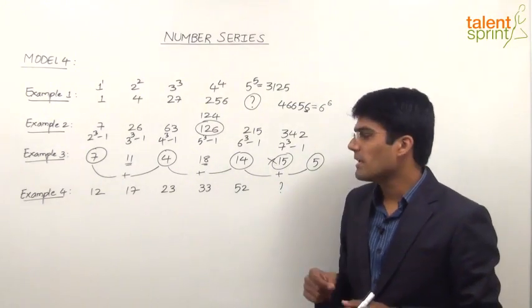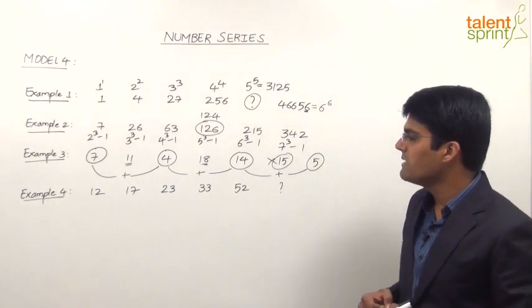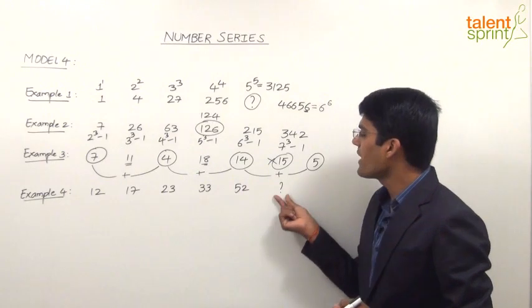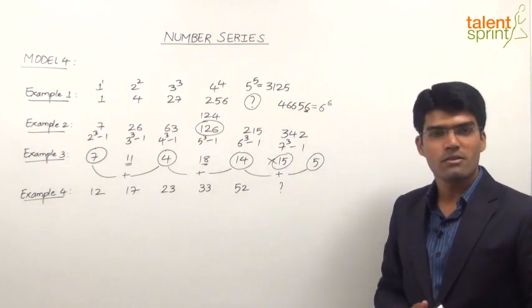Let us now look at the last example here. That is 12, 17, 23, 33, 52, question mark. We need to find out what comes in place of this question mark.